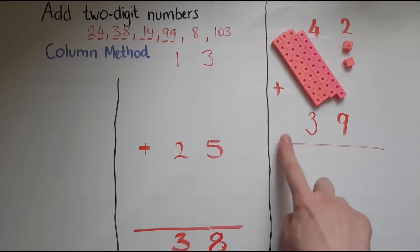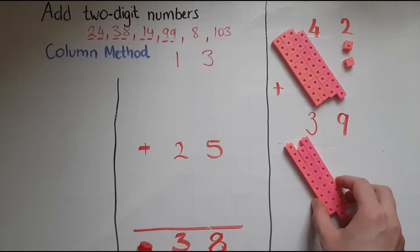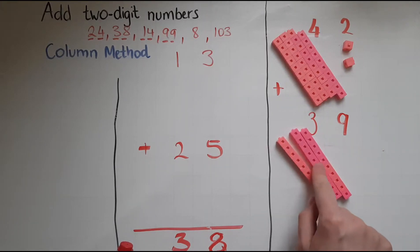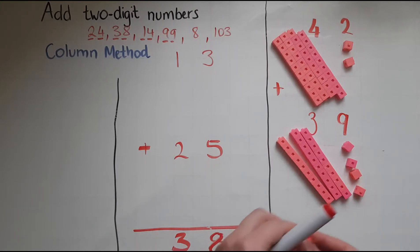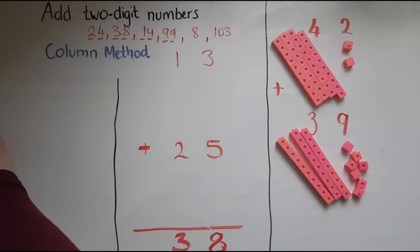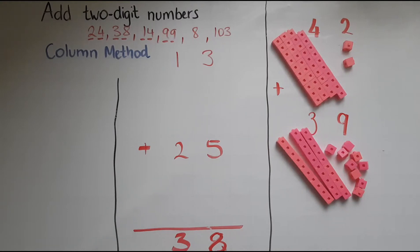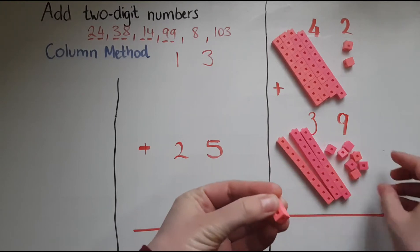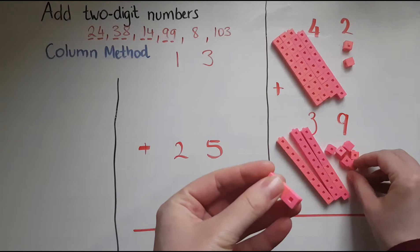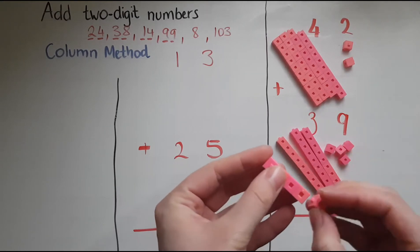And 39 is represented by 30, so 3 blocks of 10, and 9. So we've got 1, 2, 3, 4, 5, 6, 7, 8, 9. So I'll try and add them starting again with the units. Let's see, can I make 10 with these? So I've got 9 already in here, so I'll try and make with the rest of them a block of 10.